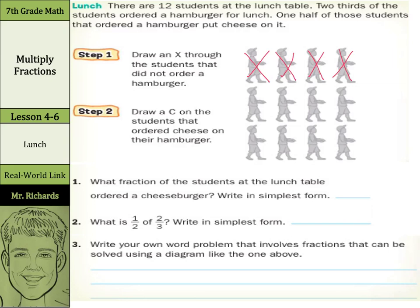Then, draw a C on the students that ordered cheese on their hamburger. So we're down to these eight. We're being told half of those students that ordered a hamburger put cheese on it. So I'm going to put the cheese on this person, this person, this person, and this person, because we have eight people left and half of those is just four.